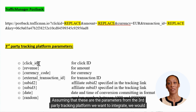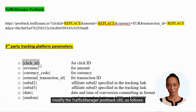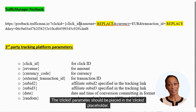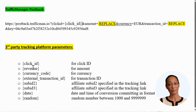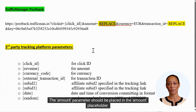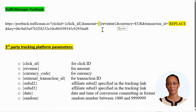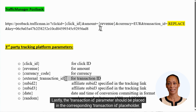Assuming that these are the parameters from the third-party tracking platform we want to integrate, we would modify the Traffic Manager postback URL as follows. The 'Clicked' parameter should be placed in the Clicked placeholder. The 'Amount' parameter should be placed in the Amount placeholder. Lastly, the Transaction ID parameter should be placed in the corresponding Transaction ID placeholder.